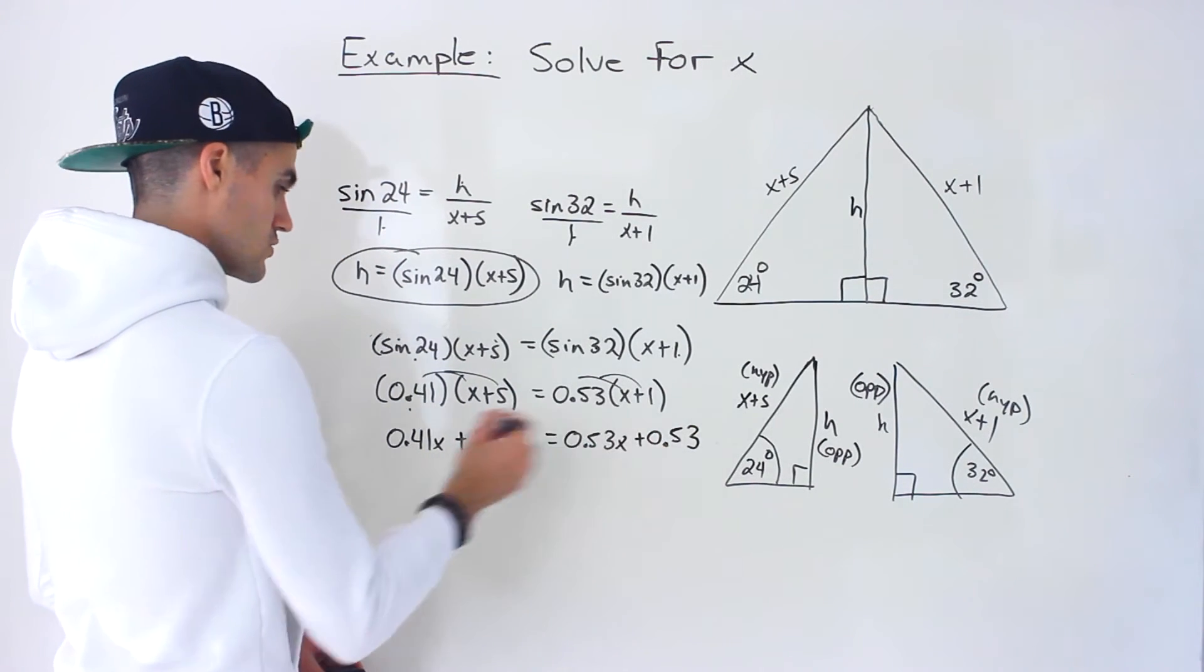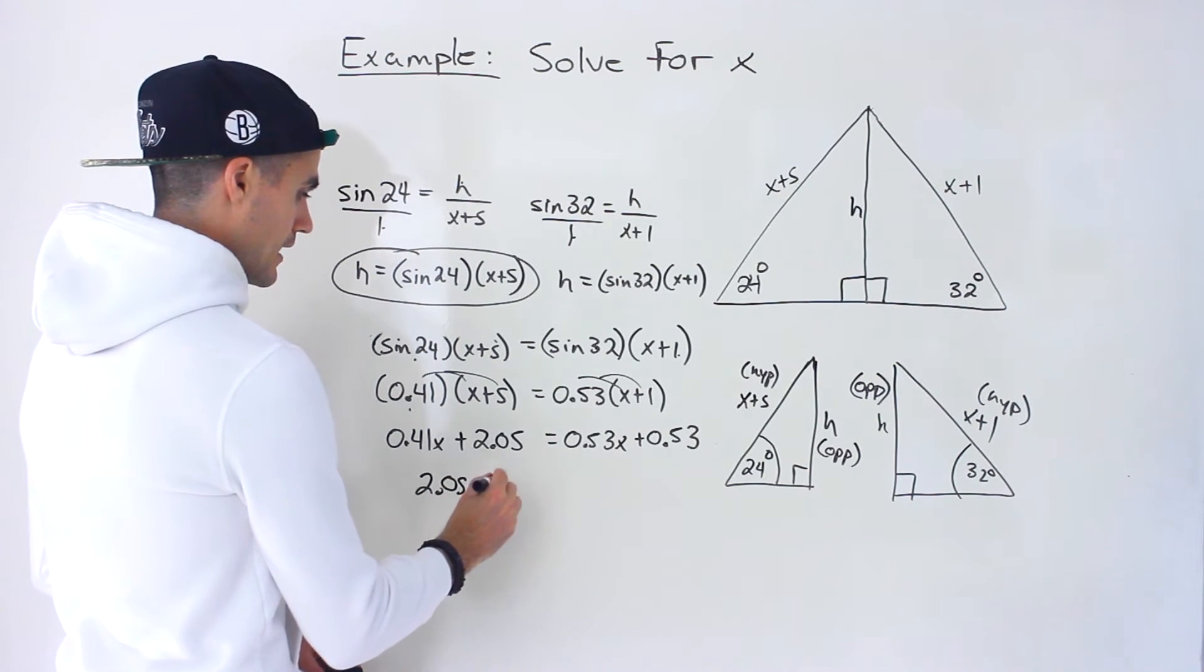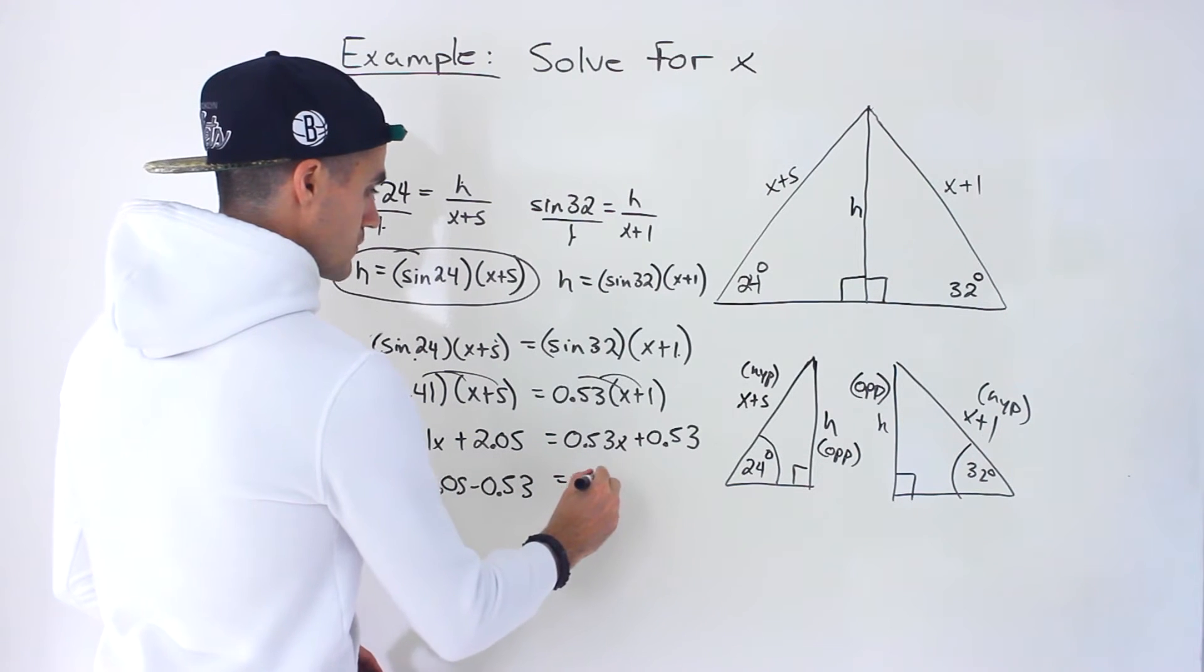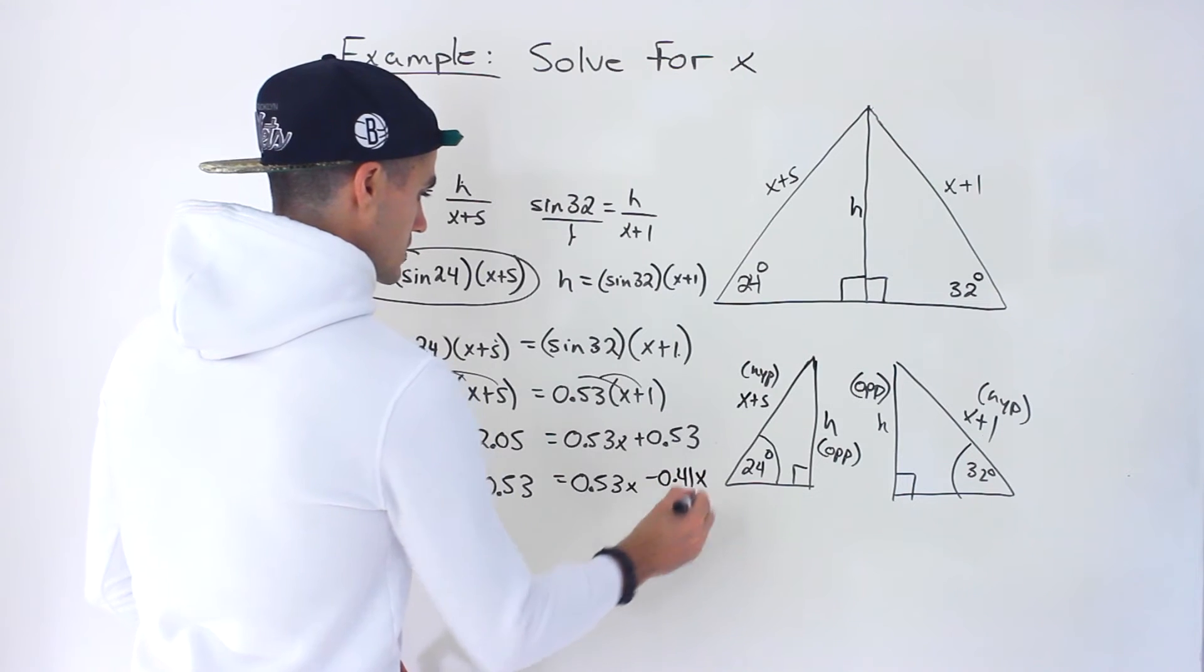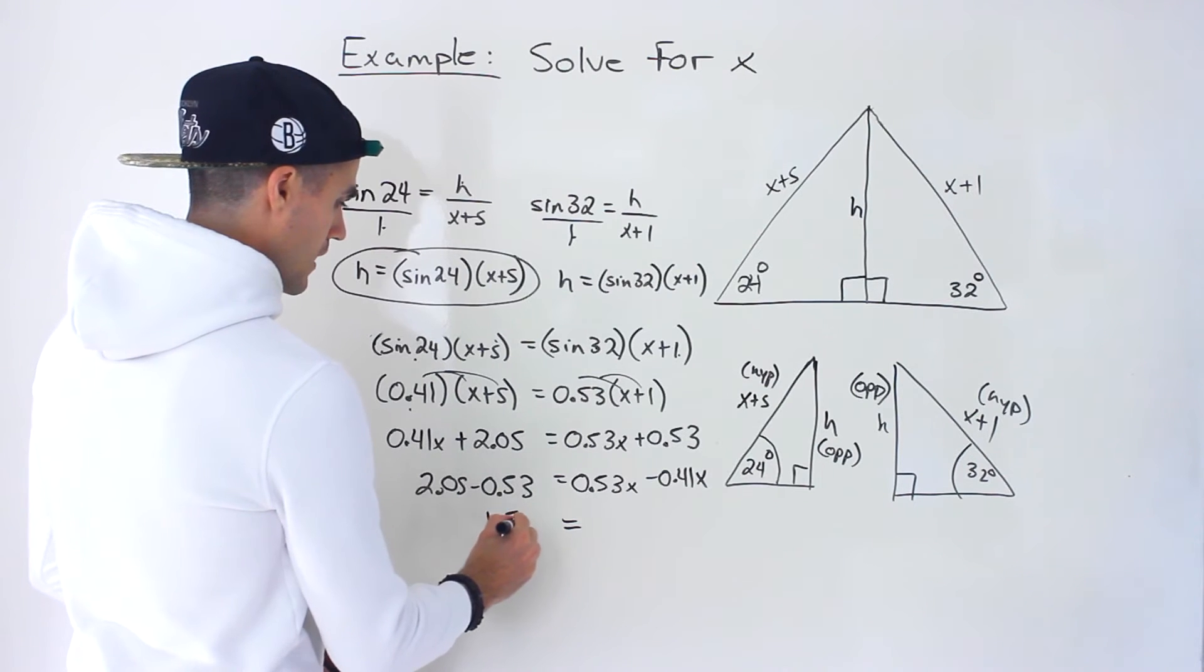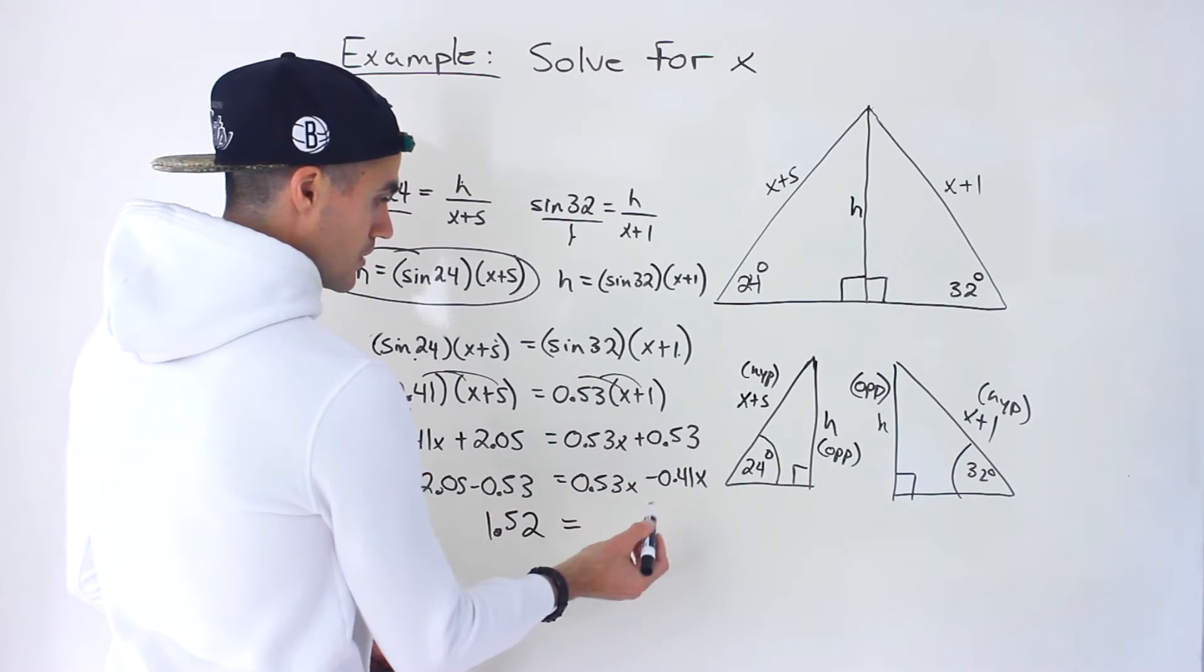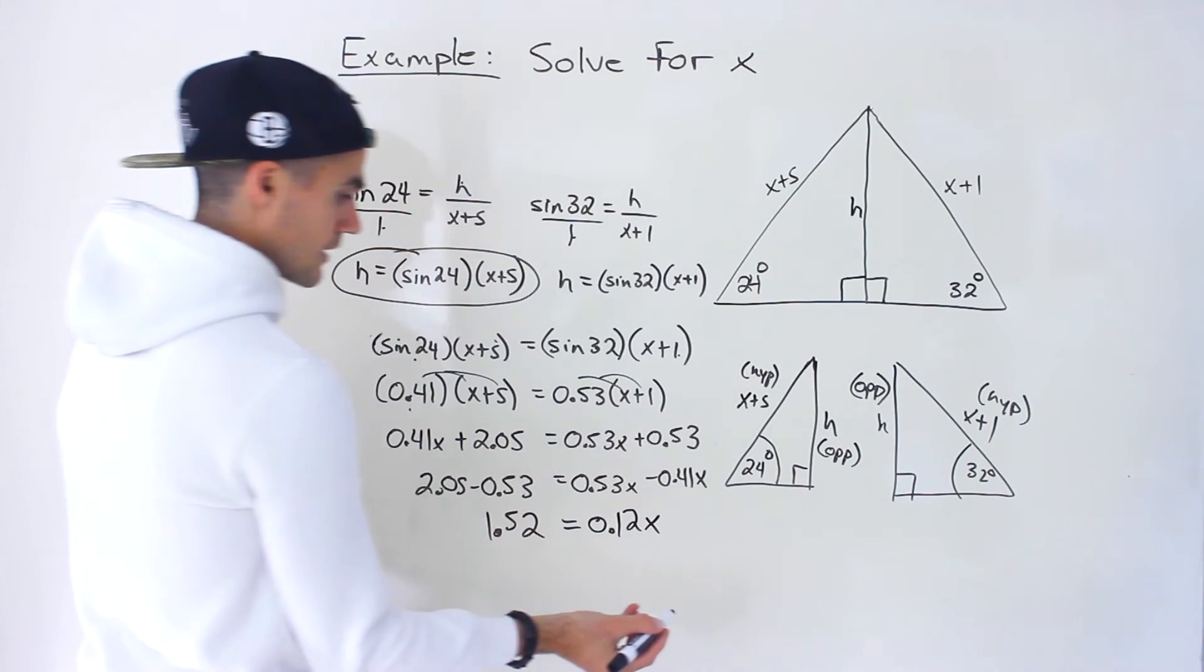What I'm going to do, I'm going to bring the 0.53 over and I'm also going to bring over the 0.41. So we'll have 0.53x minus 0.41x. So we'd end up with 1.52 on the right. 0.53 minus 0.41 would give us 0.12x.